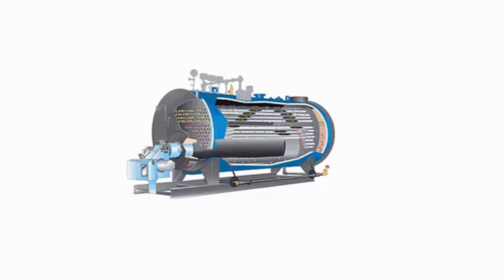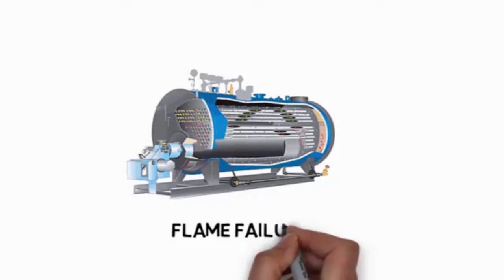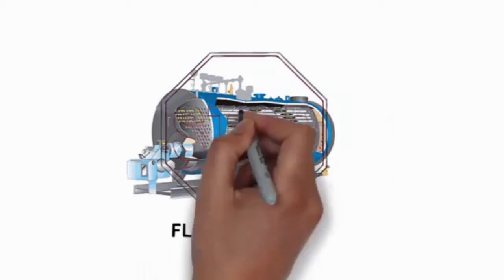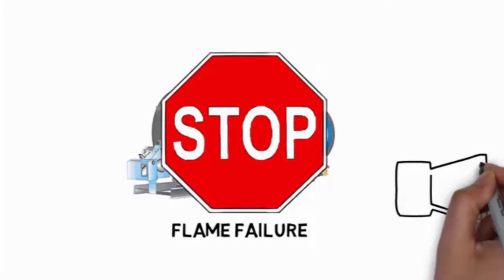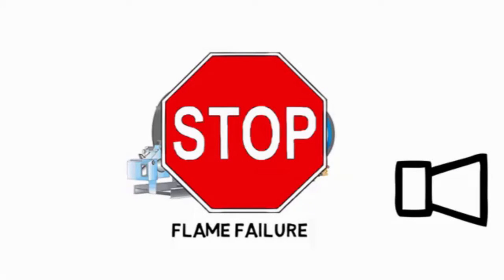If there is a flame loss or inability to maintain a stable flame after the flame establishment period has elapsed, a lockout will occur. The alarm relay is used to enunciate a lockout condition.